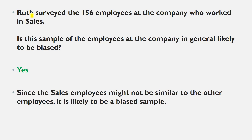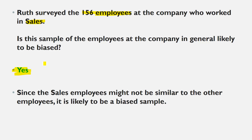Suppose Ruth surveyed 156 employees at the company who worked in sales. Here is the catch: she only surveyed employees in the sales department. Is this sample of employees at the company in general likely to be biased? The answer is yes. Since the sales employees might not be similar to other employees — there may also be finance, marketing, or other departments — she picked only sales, so this is a biased sample.